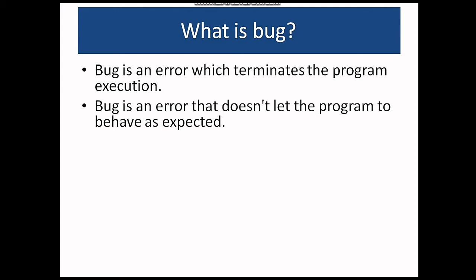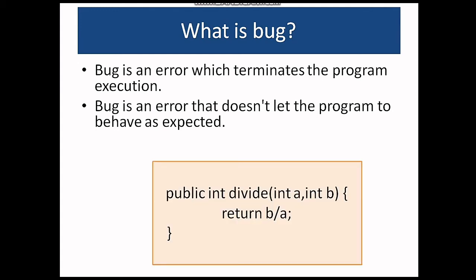Here I have a divide function which has input parameters a and b and the function returns the result of b divided by a. If I pass 2,2 to the function the program will work as expected and give the result as 1. But what if I pass 0 to the value of a? The function won't work as expected because anything divided by 0 is undefined and the program will terminate here.